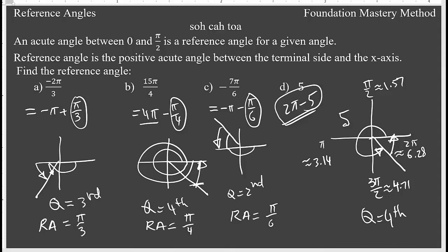To summarize: negative 2π/3 has a reference angle of π/3 and is in the third quadrant. 15π/4 has a reference angle of π/4 and is in the fourth quadrant. Negative 7π/6 goes in the second quadrant and the reference angle is π/6 — all positive because the definition requires a positive acute angle. Since 5 radians is between 4.71 and 6.28, it is in the fourth quadrant and the reference angle is 2π minus 5.